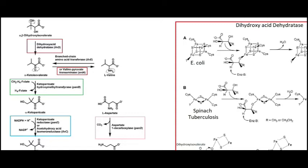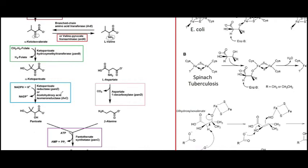The keto pantoate hydroxymethyl transferase turns it into alpha keto pantoate, and then we have the keto pantoate reductase, or PanE. Using NADPH, we turn the alpha keto pantoate into pantoate, and you can see that is happening through a reduction of this ketone right here into an alcohol group.